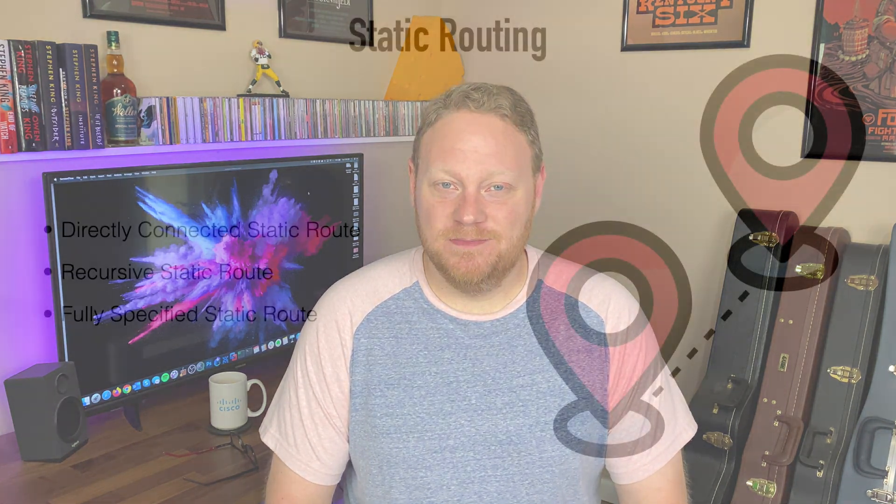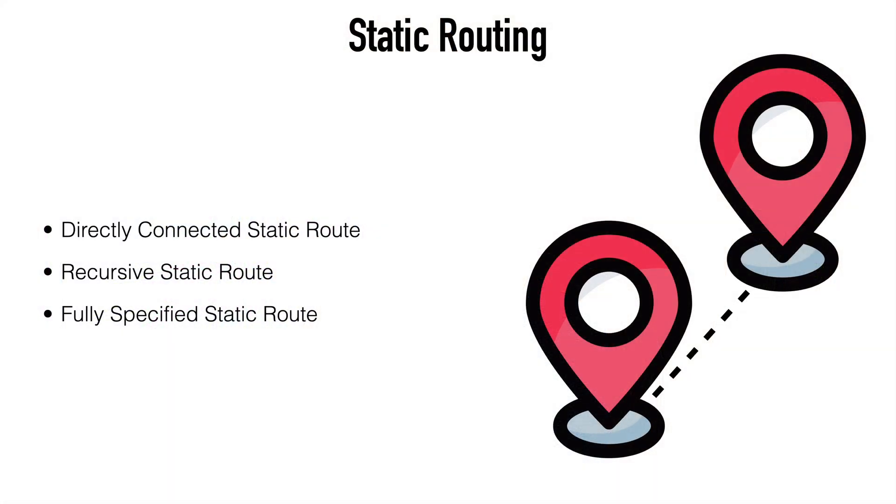Hey everyone, I'm Charles Judd, and in this video we're going to look at the 1.2c topic of static routing. I've briefly looked at using static routes in my video covering administrative distance, specifically how we can use floating static routes to create backup routes in our network. So here I want to round out that topic and fill in a few of the gaps, starting with the different types of static routes. We can group static routes into three main classifications.